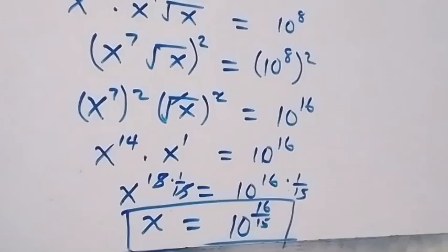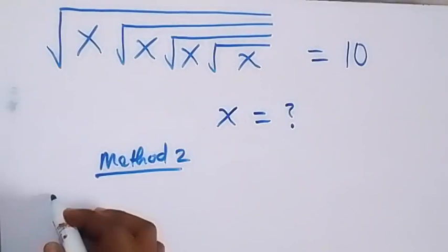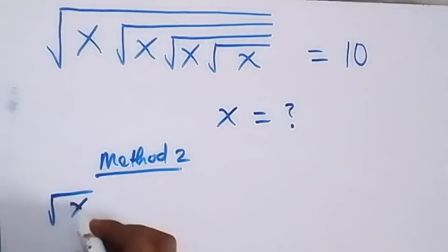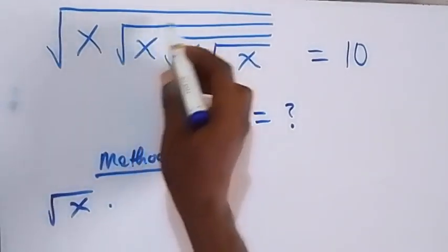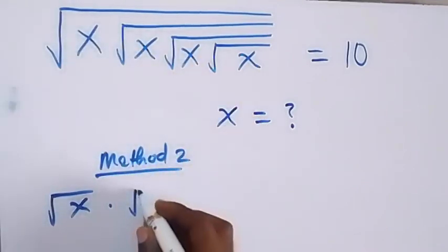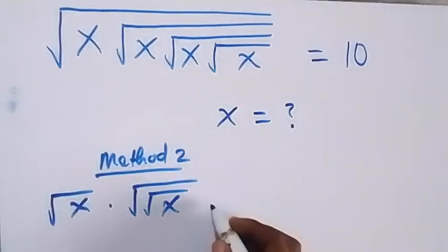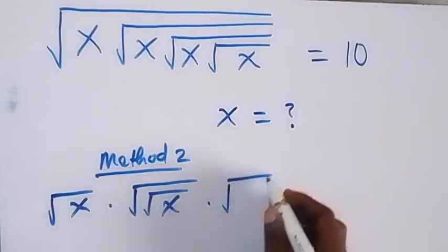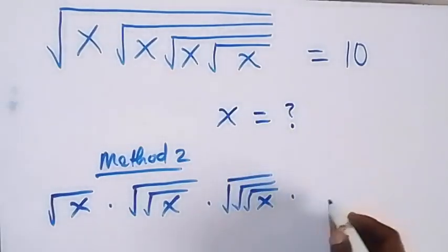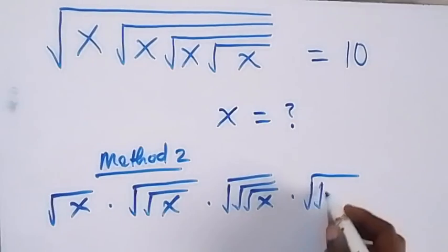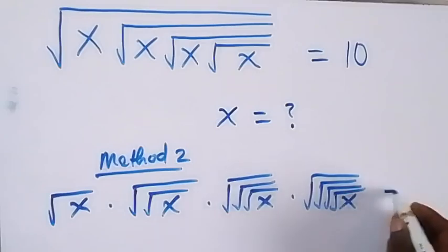Now let's use the second method. From what is given, we can break this down: the first term is root x; this x contains two roots, so we have root of root x; this x contains three — square root of square root of square root of x; and this contains four — square root of square root of square root of square root of x.